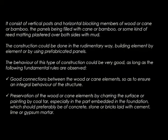Previously, construction was done element by element, but as technology advanced, we now use prefabricated panels — brought to the site and then constructed with. The behavior of this type of construction could be very good as long as certain fundamental rules are observed. One: there should be good connections between the wood or cane elements so as to ensure integral behavior of the structure. Two: preservation of wood or cane elements by charring the surface or painting with coal tar, especially in the part embedded in the foundation, which should preferably be of concrete, stone, or bricks laid with cement, lime, or gypsum mortar.